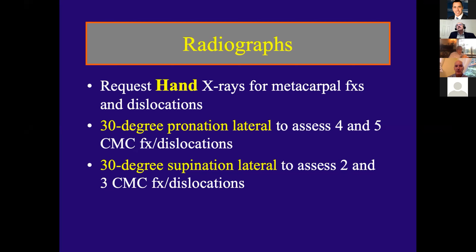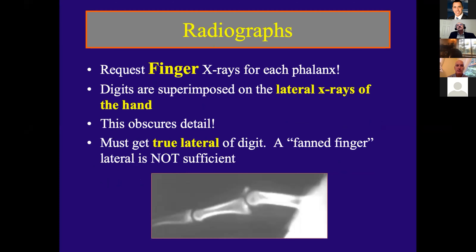Similarly, you order a 30-degree supinated lateral to assess the second and third CMC joints. You must request a finger x-ray for each finger injury — do not get a hand x-ray for a finger injury. This x-ray shows a fracture that was missed because they did not get a true lateral of the finger. On a hand x-ray, fingers can be superimposed on the lateral, so you will miss injuries. Get a finger x-ray if you think you have a finger injury.